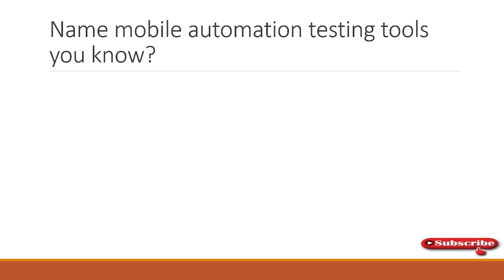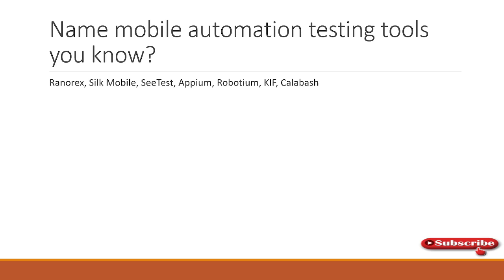Name the mobile automation testing tools. This is a question expected at level one or level two. Tools available in the market include Ranorex, Silk Mobile, SeeTest, Appium, Robotium, KIF, and Calabash. Appium is a great starting point as it is open source and supports both Android and iOS. Robotium and Calabash are also open source and good tools for mobile automation.